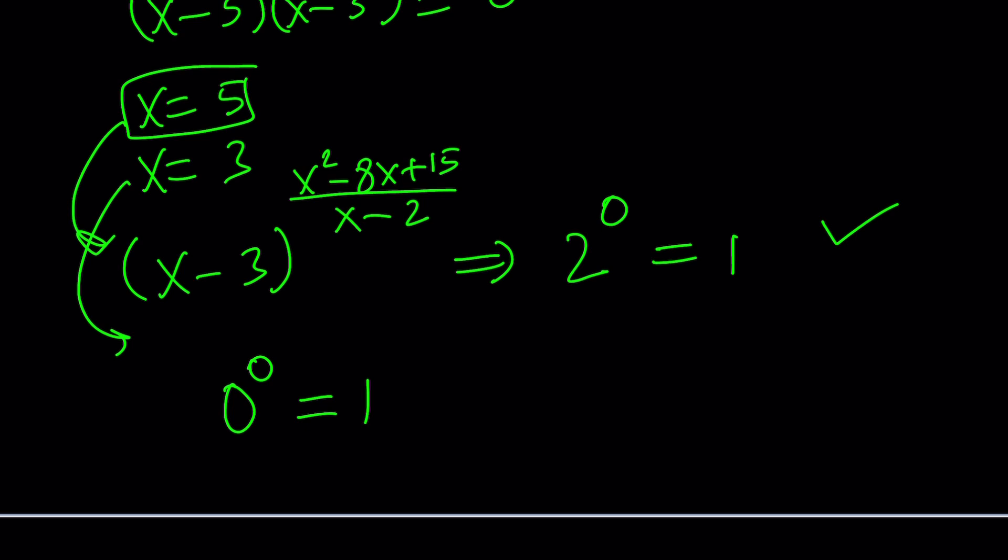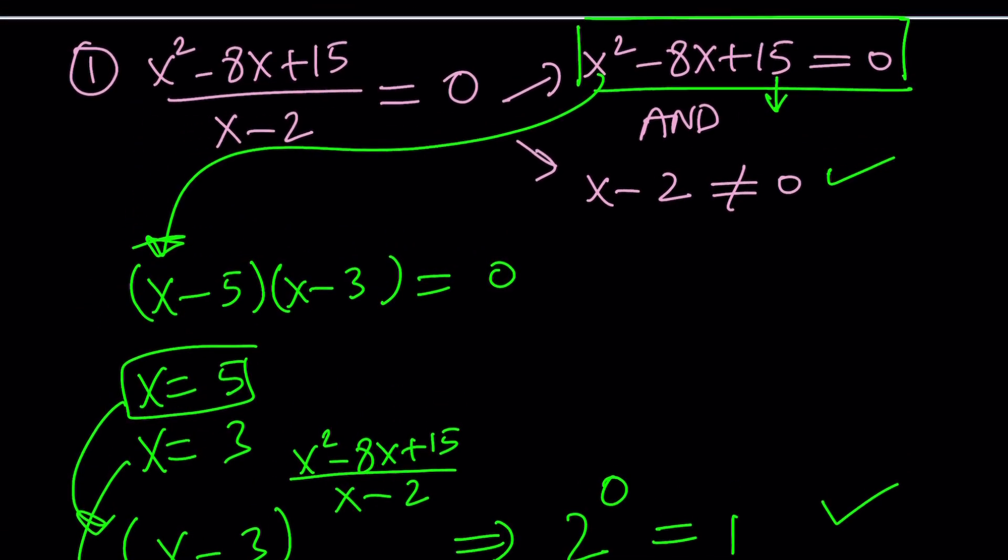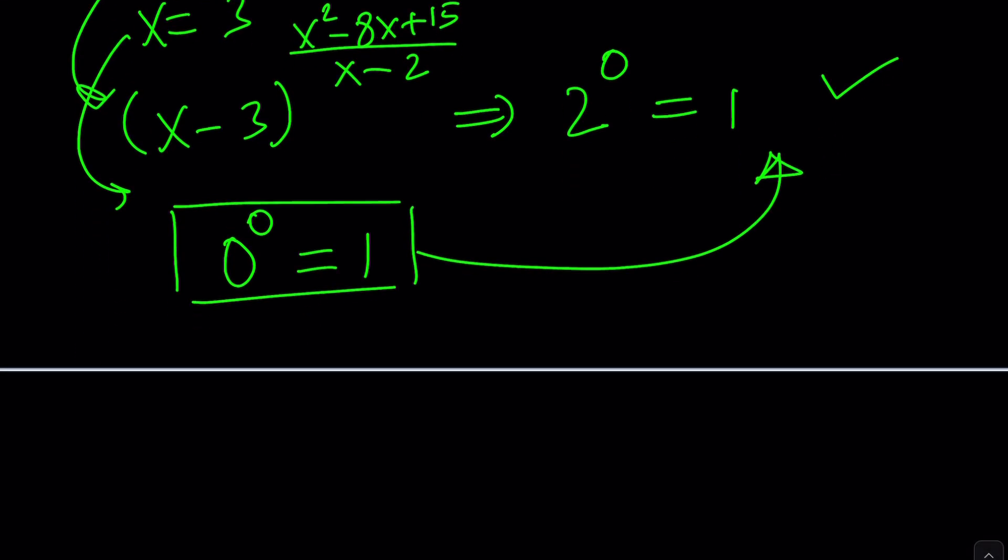Some people don't accept that. But the majority thinks, I think, majority of people think 0 to the power of 0 is equal to 1. Again, I made a video. I also shared the link in the description. I might also share it in the comment section down below if I don't forget. So the first case basically gives us x equals 5 and x equals 3 as two solutions.